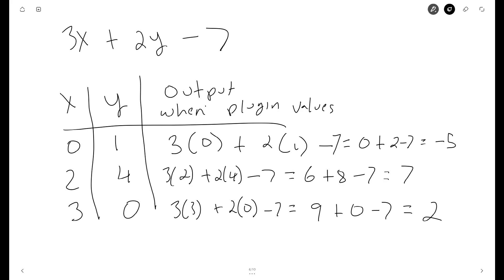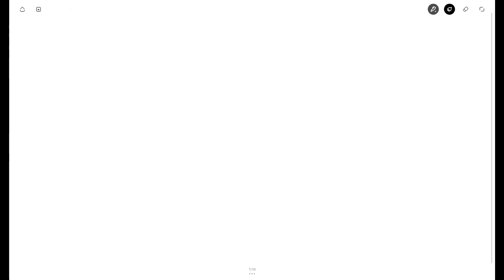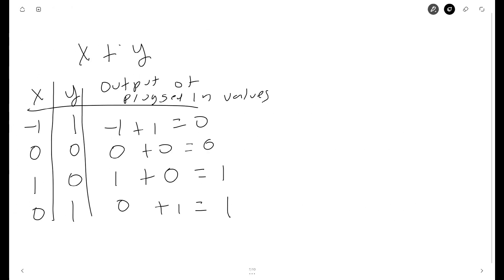For example, 3 times 0 plus 2 times 1 minus 7 is equal to 0 plus 2 minus 7, which is equal to negative 5. Then 3 times 2 plus 2 times 4 minus 7 is equal to 6 plus 8 minus 7, which is equal to 7. And then 3 times 3 plus 2 times 0 minus 7 is equal to 9 plus 0 minus 7, which is equal to 2.